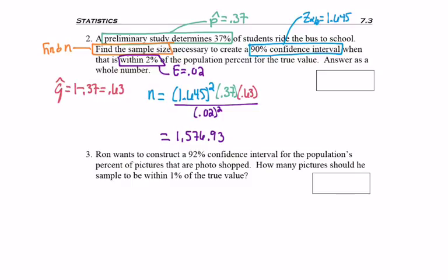I get a sample size of 1,576.93, but we always bump to the next whole number. And 1,577 is the sample size I'll be selecting from the population to estimate the population percent of people who ride the bus to school.